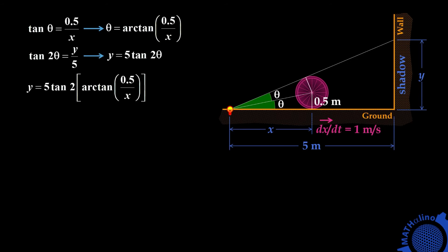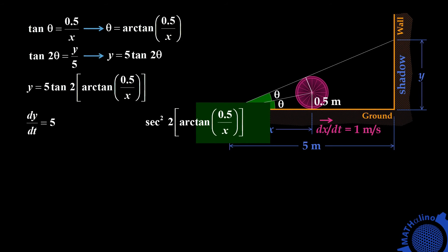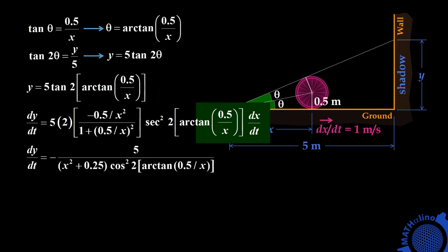This is the great advantage of using the chain rule with our calculator, because we can create more complicated equations and find dy over dt very easily. For the sake of discussion, let us differentiate manually. dy over dt equals 5 times the derivative of tangent — which is secant squared of the angle 2 arctangent of 0.5 over x — times the derivative of the angle, which is 2 times negative 0.5 over x squared, all over 1 plus (0.5 over x) squared. That is the derivative of the arctangent, and don't forget we multiply by dx over dt. Simplifying, we have negative 5 over the quantity x squared plus 0.25, times cosine squared of 2 arctangent of 0.5 over x, times dx over dt.